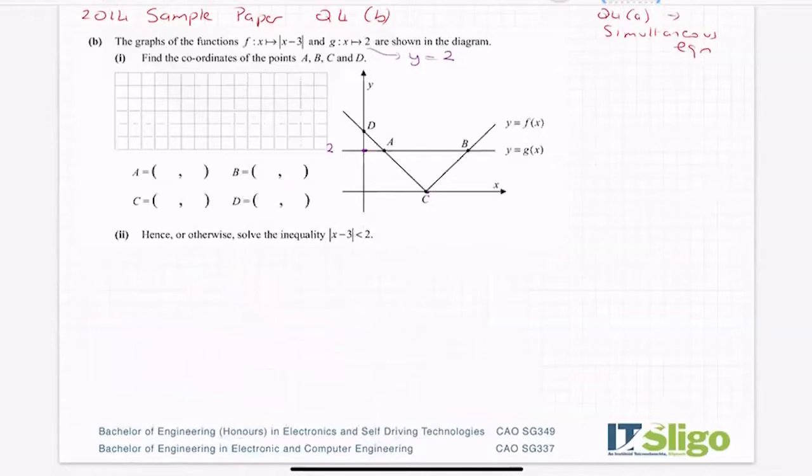So just a little bit of background to how you would go about plotting a modulus function. Now, you didn't need to know that specifically for this question. I suppose it just makes it easier to see what is happening. So let's do the question. The graphs of the function f(x) is the modulus of x minus 3, and g(x) are 2 are shown in the diagram. Find the coordinates of the points a, b, c, and d.